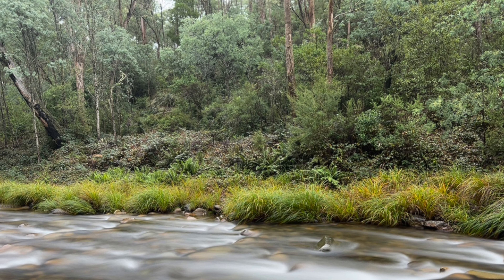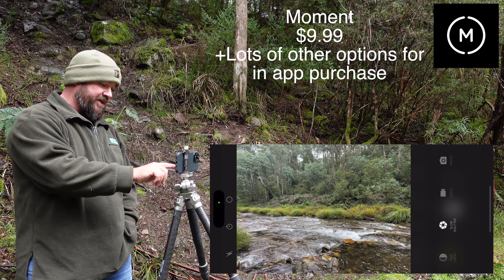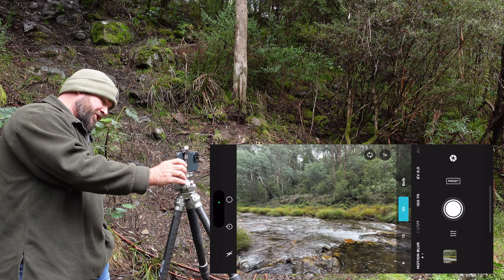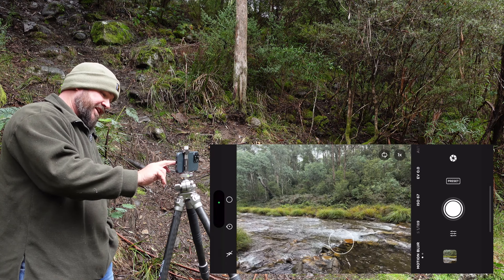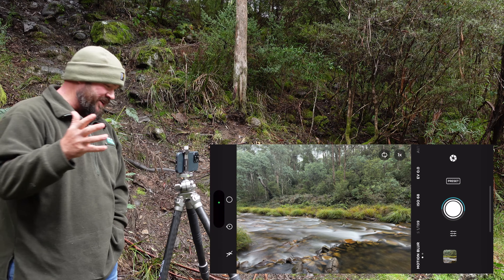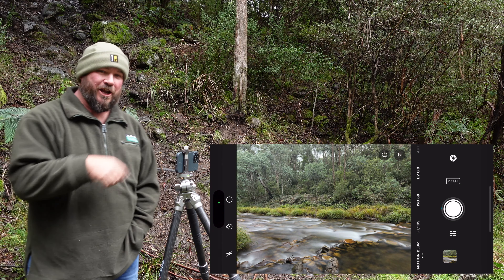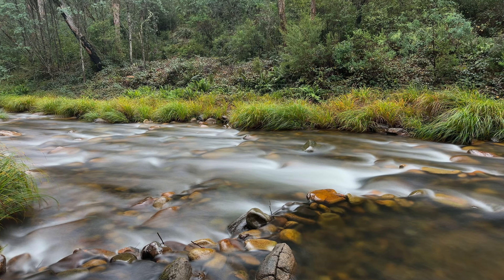Moment. Using Moment is very much like using Reflex. Going to hit that little gear icon up there — slow shutter. Hit the motion blur. We'll go 8 seconds. Touch out there for focus. Hit the shutter button, off we go. That photo's done.